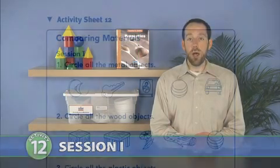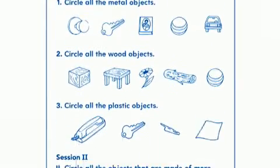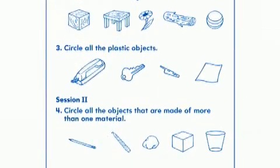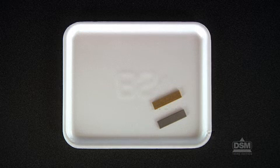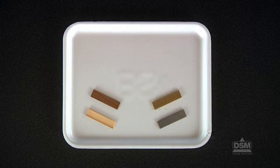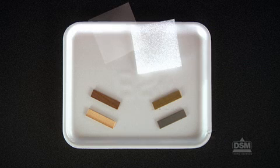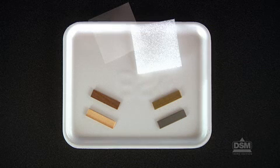To prepare for Session 1, make a copy of Activity Sheet 12 for each student. Each team of four will need a sorting tray containing two metal samples (one brass, one steel), two wood samples (one light-colored, one dark), two plastic samples (one clear, one opaque).